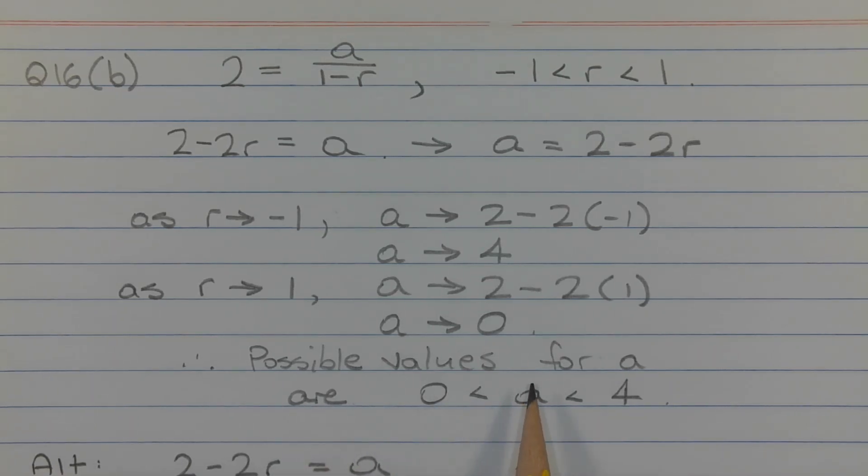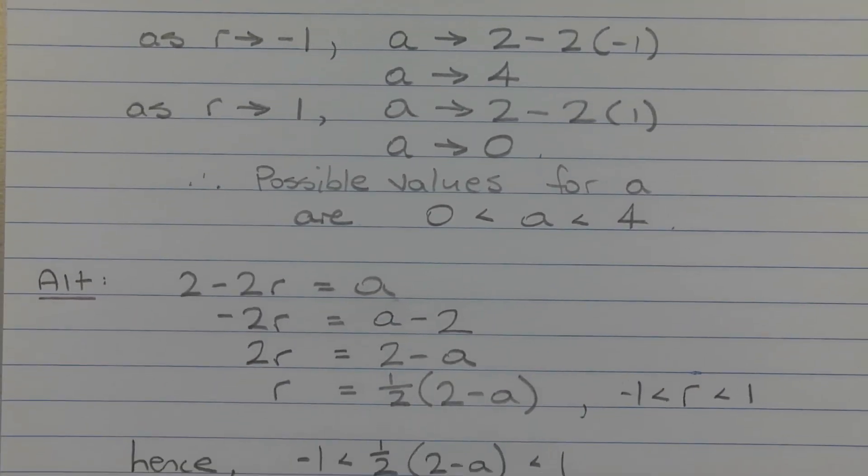Therefore, possible values for A are A greater than 0 and less than 4. Let's have a look at the alternative way of solving this problem.